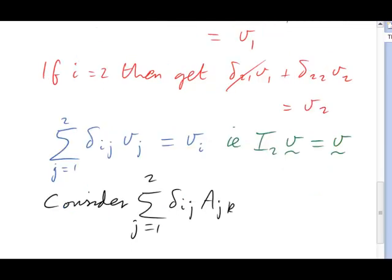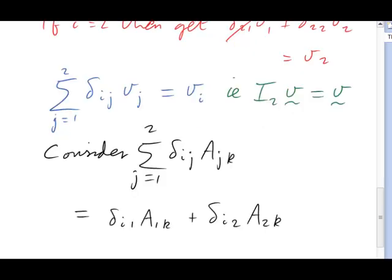A 2x2 matrix, of course, has two labels, one for the row and one for the column. I'm summing the column index of the delta with the row index of A. If you think about it, what I'm really doing there is just matrix multiplication of each row times each column. Let's see what we get. There are just two terms, one for each of the possible values of j. Once again, we can ask, what happens if i is 1, what happens if i is 2?